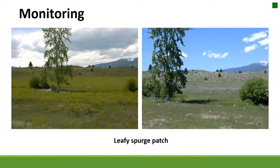Another time to monitor would be if you had a weed management plan. The picture on the left shows leafy spurge and the picture on the right doesn't. The only way to know if your weed management plan is being effective is to monitor over time so you can determine if the weed population is getting better or worse and make necessary adjustments.